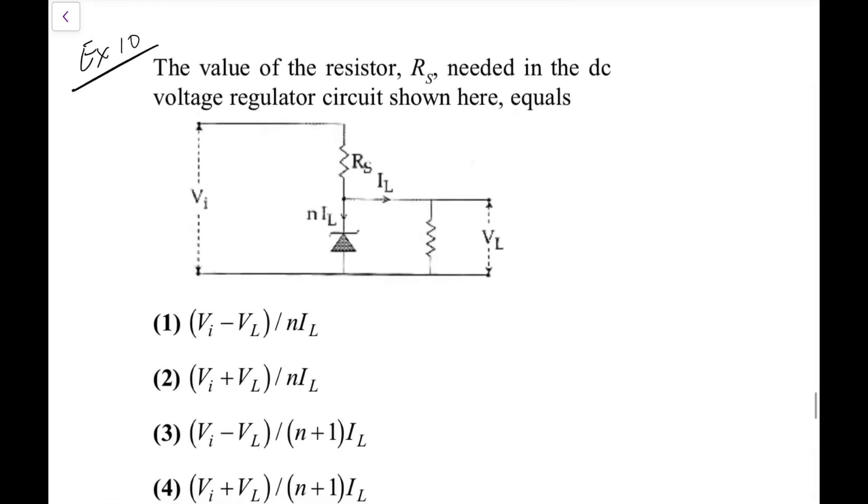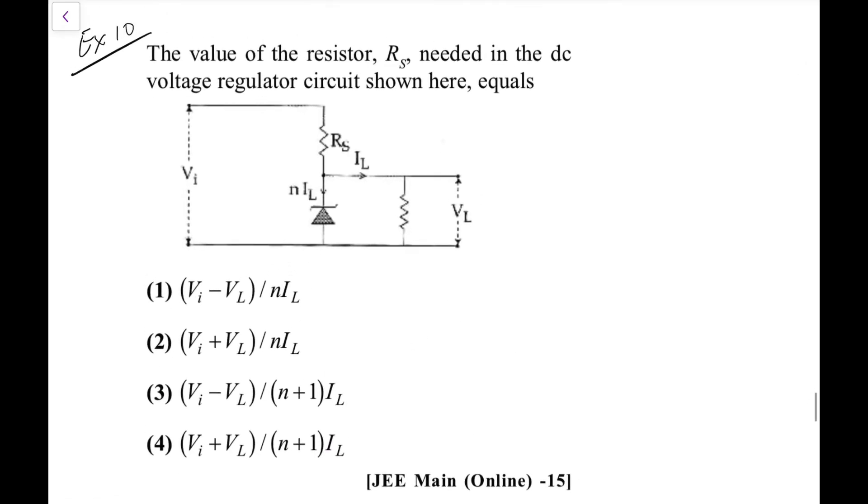Now one more from the zener one from JEE Main Online 15. The value of resistor needed in the dc voltage regulator circuit here equals. So what you have, you need this is V_L, this is the voltage, this I_L goes here, n times I_L goes here. That means this will be n plus 1 I_L from junction law.